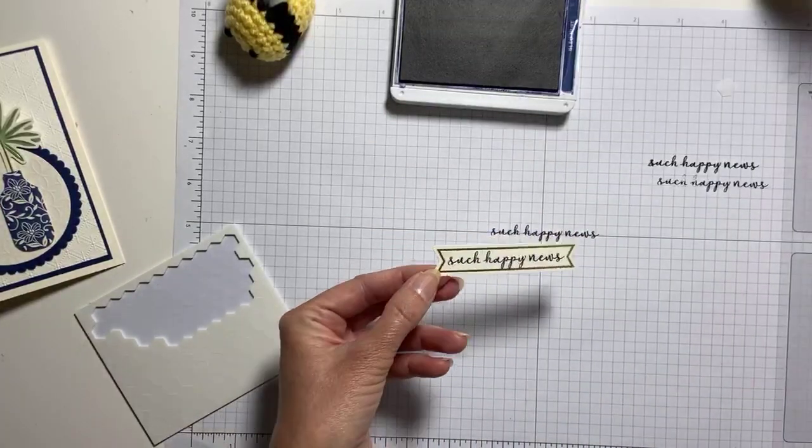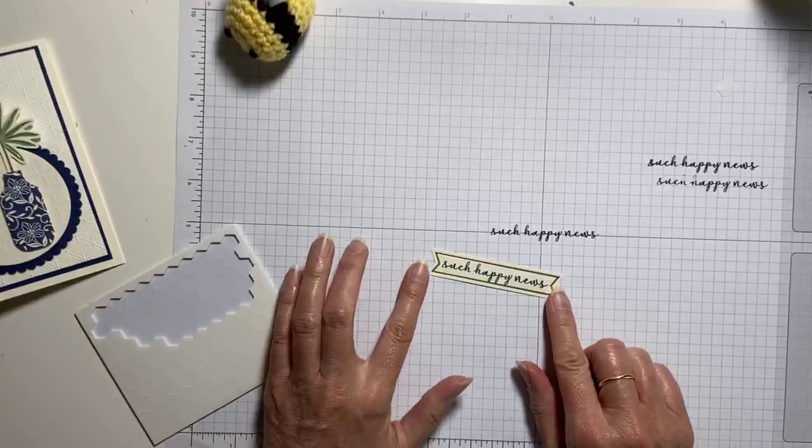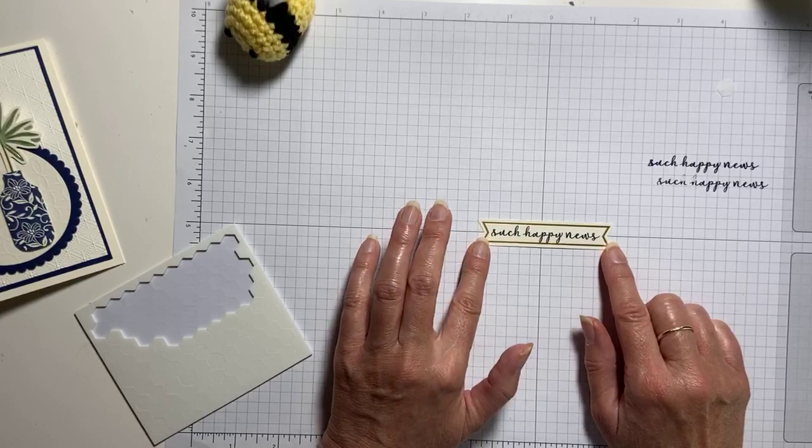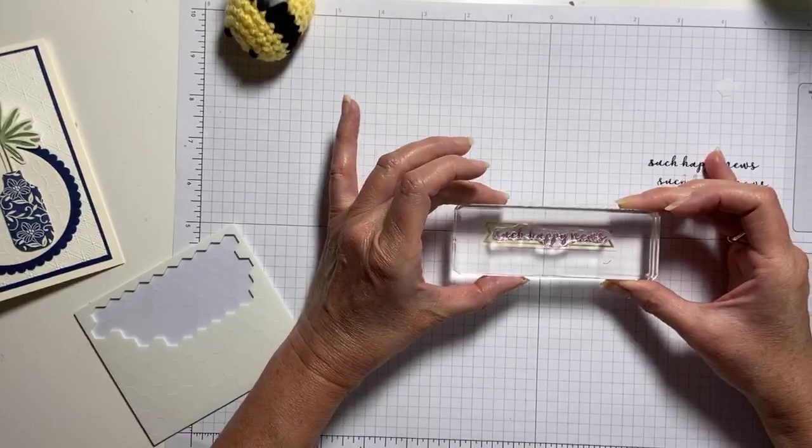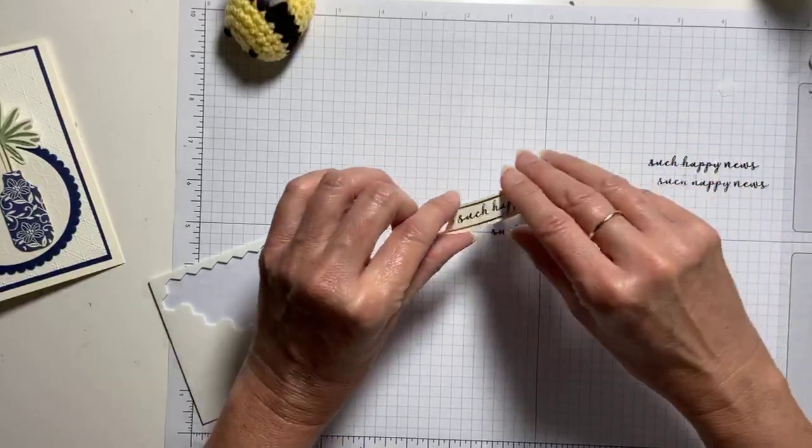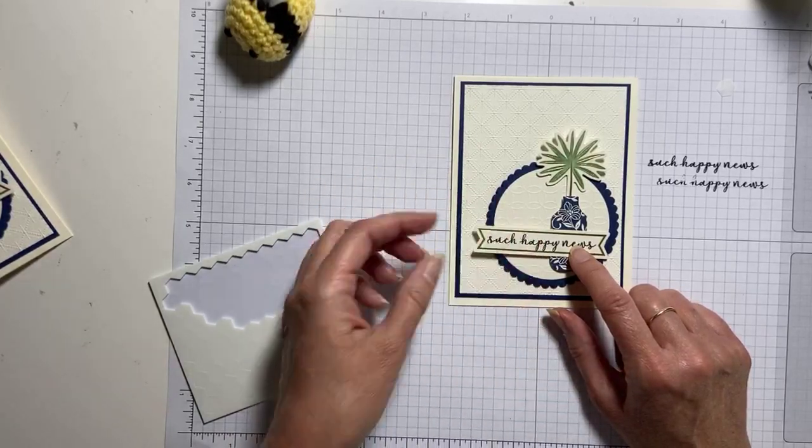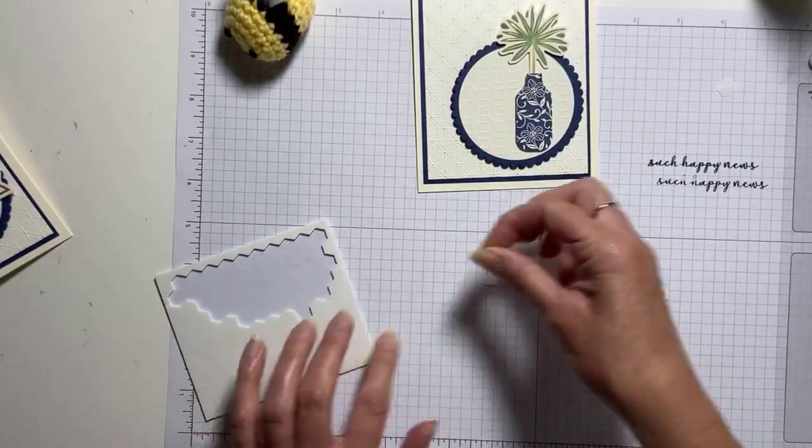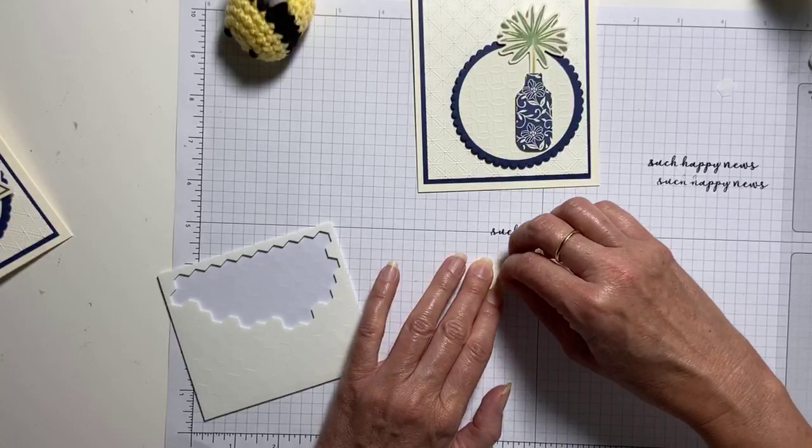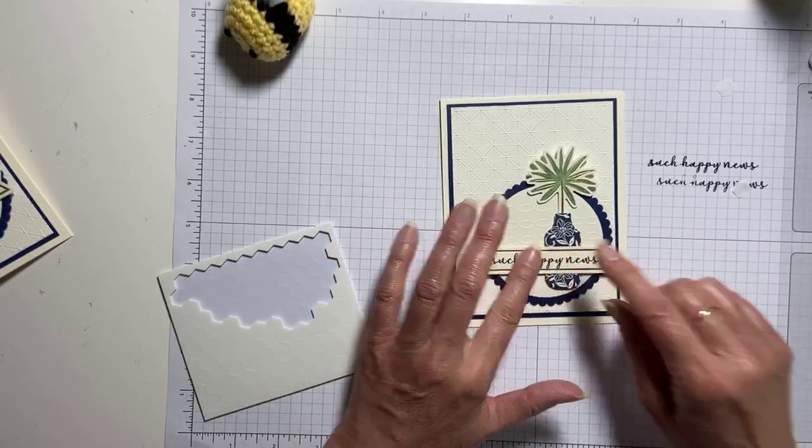Such happy news. And in order to get that stamped straight, you saw what I did, right? I put it on the crosshairs of my grid paper. And I lined it up. And then I can see through the photopolymer. So I'm going to put some dimensionals just on the left-hand side. Because if I look at my card, I've got my vase popped up. I want that to rest there. So on the left-hand side of my banner, I'm going to put dimensionals only here. Otherwise, it's wonky and a little bit lopsided.